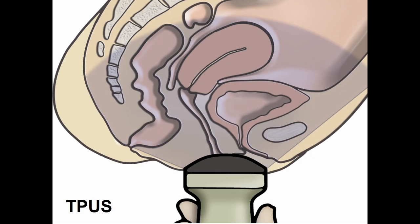Transperineal ultrasound is very easy. The convex probe is positioned translabially — so it's not invasive. You can have a field of view from the symphysis pubis to the coccyx, and you can visualize the anterior, middle, and posterior compartment.